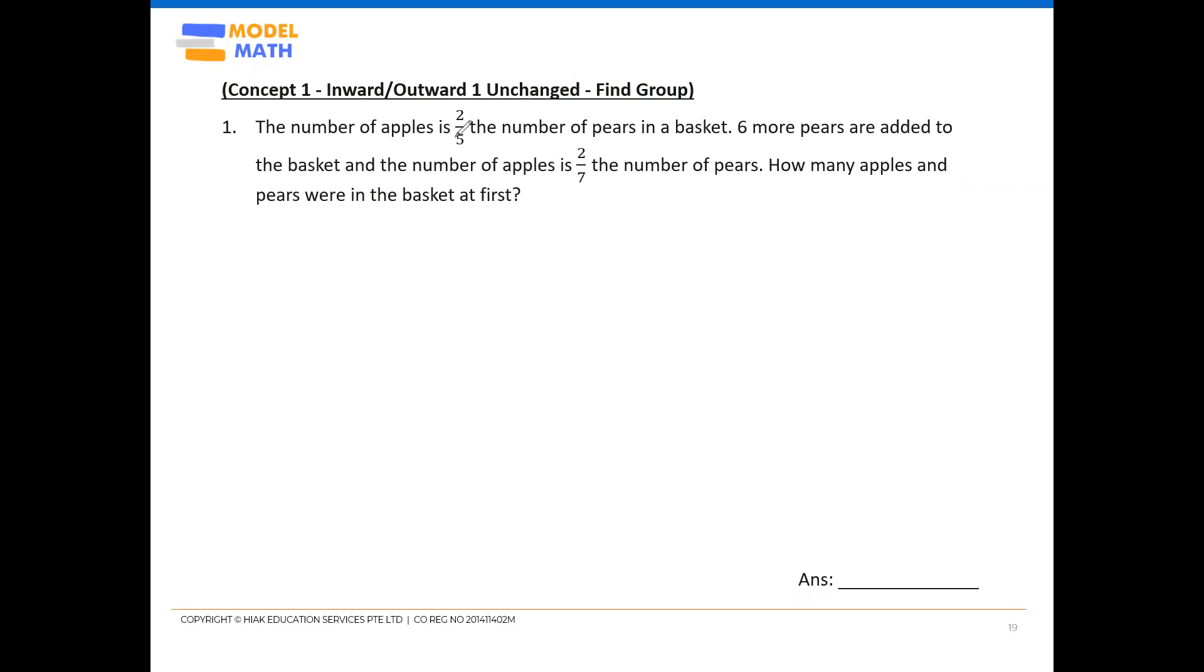When you read this question, notice that the fractions indicate the units for each item. If you observe, these two units refer to apples, and the five refers to pears. Same goes for the next fraction - two units is apples, seven is pears. This is what you learned in an earlier lesson: how to recognize a sentence involving units when given a fraction.